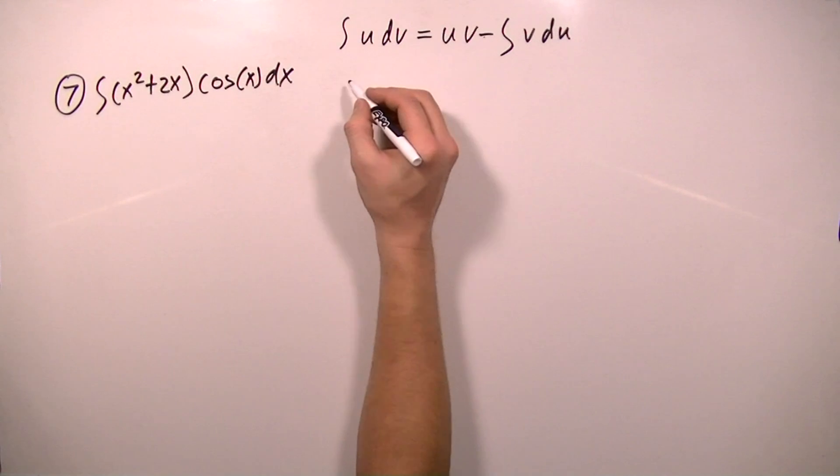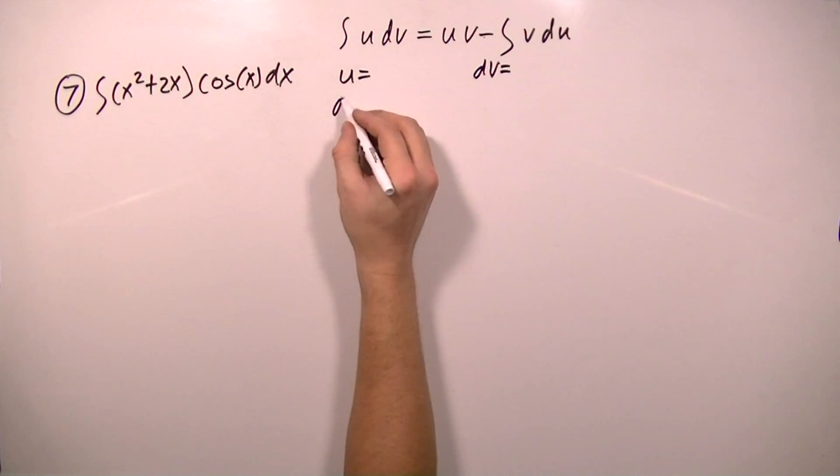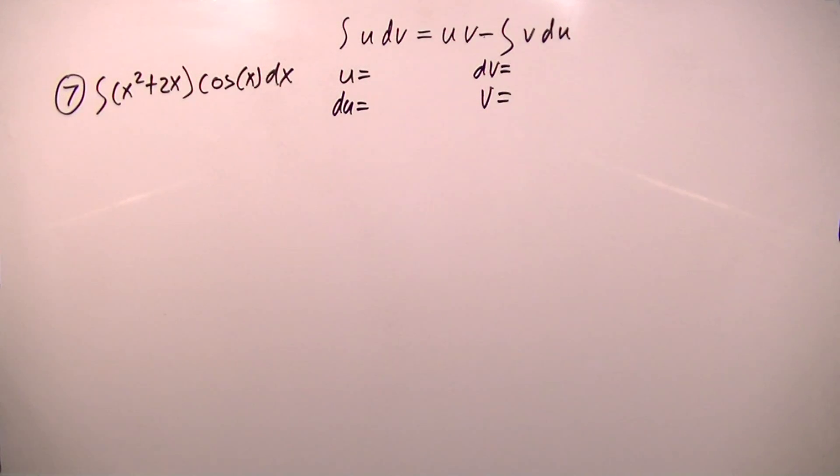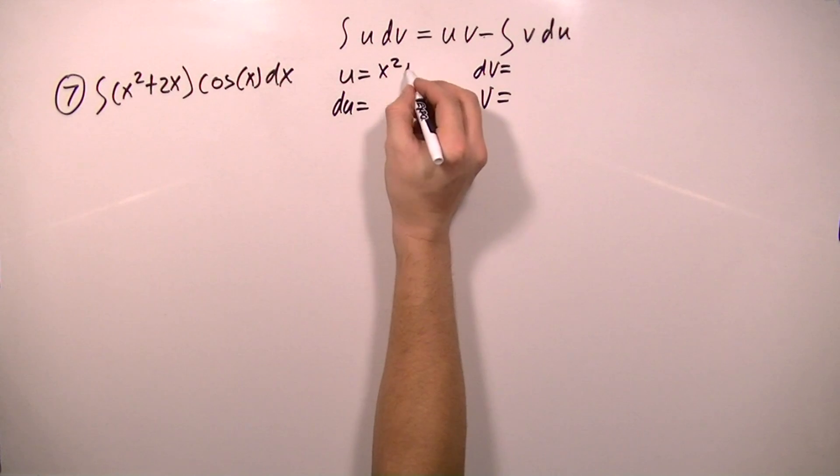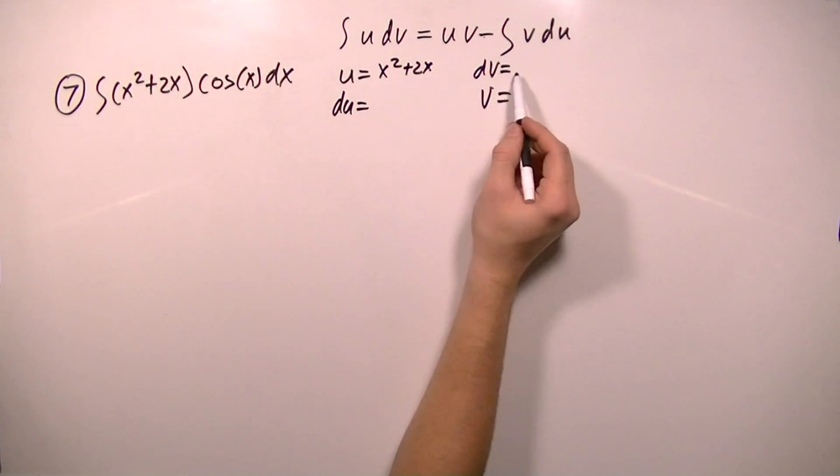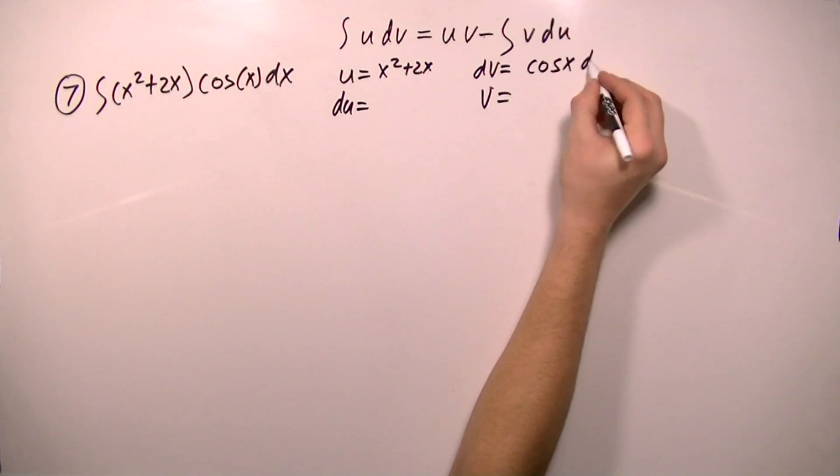And since this is integration by parts, I need to decide which factor I want to set equal to u, and which factor I want to set equal to dv, and then I will need to find the derivative of u, and I will need to find the integral of dv. So I want to set u equal to x squared plus 2x, this factor. And that means that dv will have to be what's left, which would be cosine x dx.